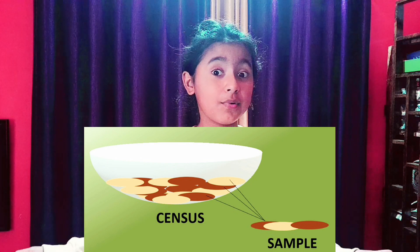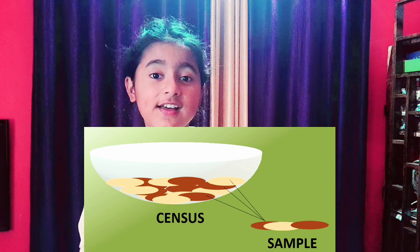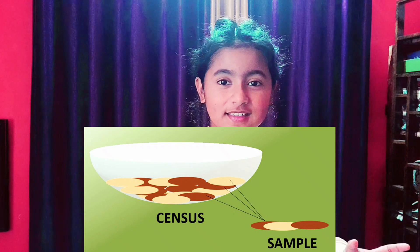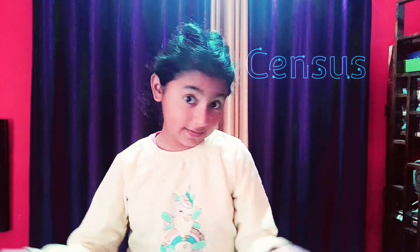Census and sample methods of collecting data are quite common. Census is when you ask each and every person from the whole population their favourite milkshake. But in a sample, we ask one house out of every 10 houses and then multiply it to estimate the population. There are different types of sampling too: random and non-random.